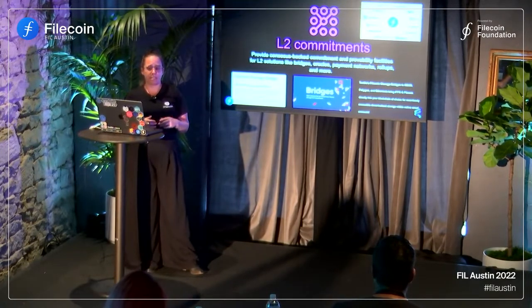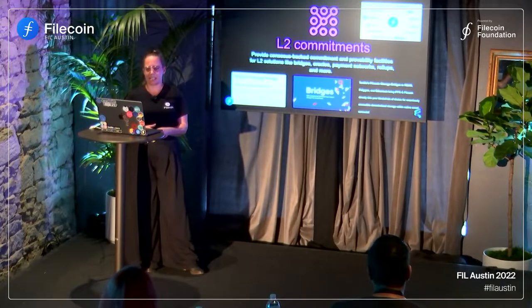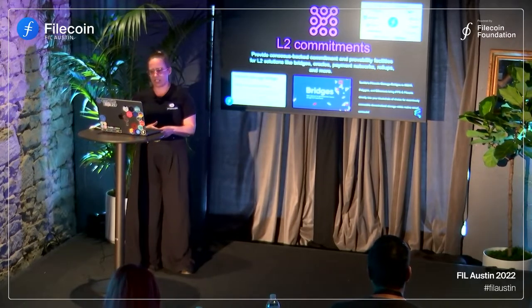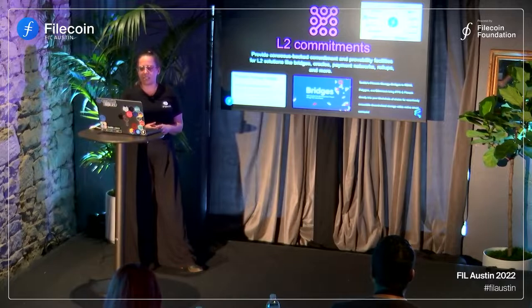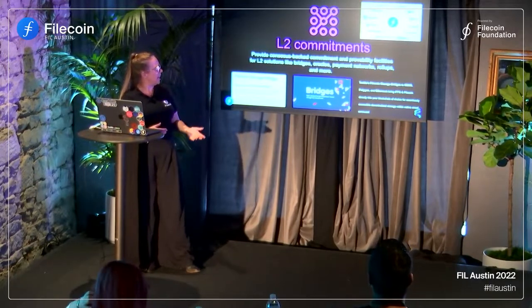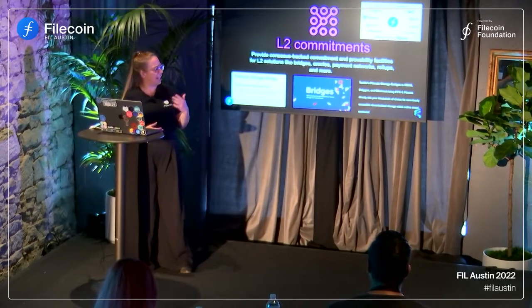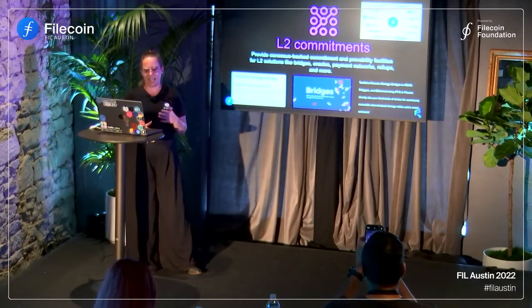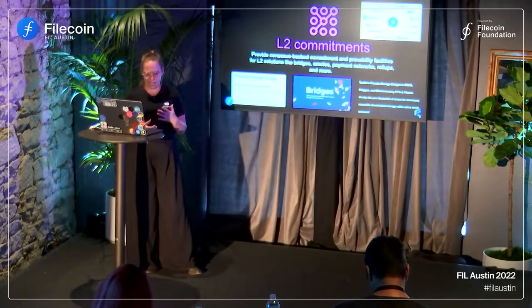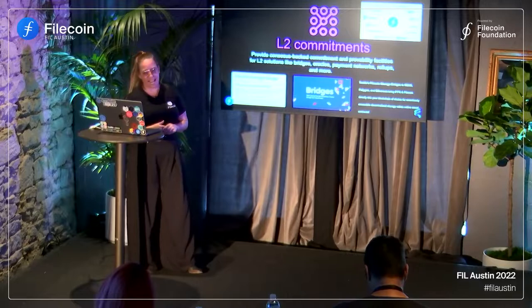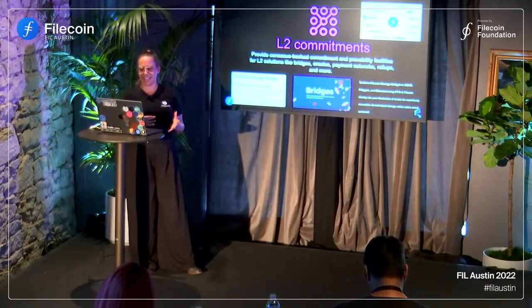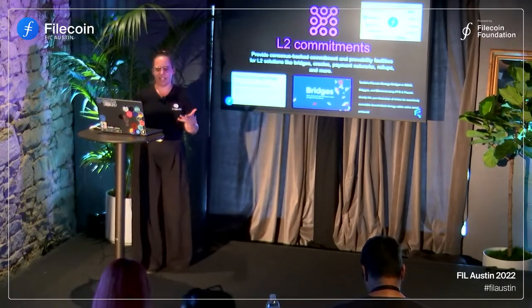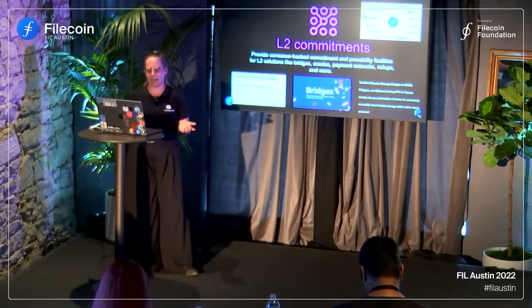The FVM can also help provide consensus-backed commitment and provability facilities for L2 solutions like bridges. There are already people building bridges for our network — such as Textile, who have built bridges to NEAR, Polygon, the Ethereum network, Hedera, and many more. At some point they're going to need a layer one to plumb that network. These layer two mechanisms will eventually need to commit to layer one, and that's why FVM will accelerate innovation and value creation in the Filecoin ecosystem by bridging to other networks.